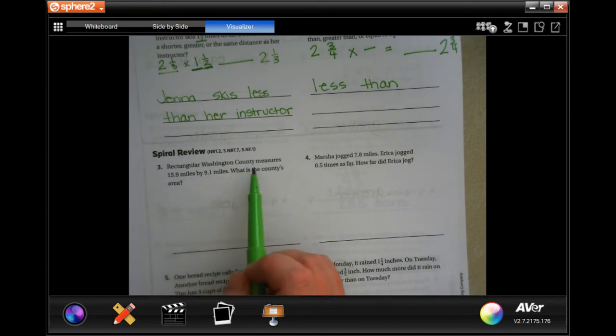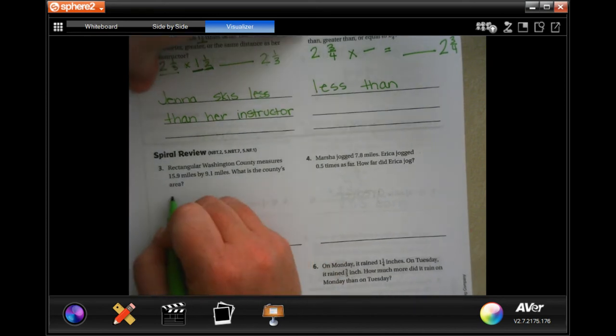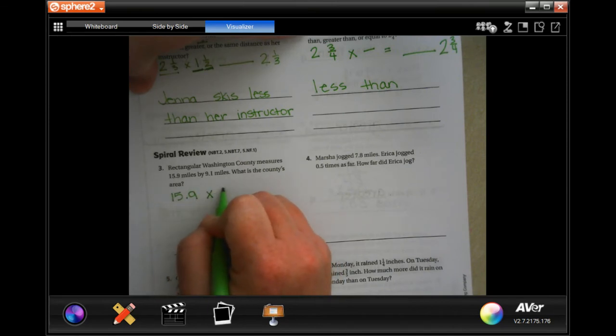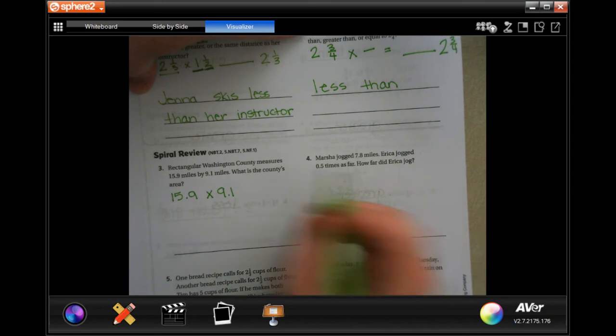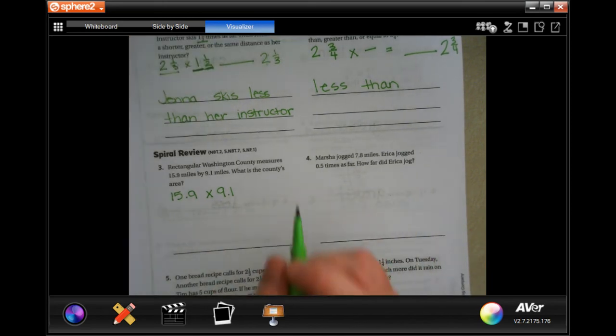Rectangular Washington County measures 15.9 miles by 9.1 miles. What's the county's area? Okay, so let's do the math.